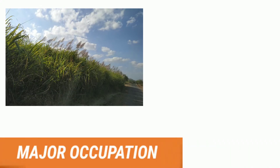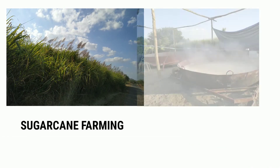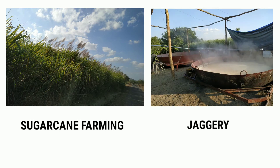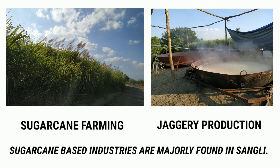Here in Sangli, the major occupation of people is sugarcane farming and jaggery production. We can say that sugarcane-based industries are majorly found in Sangli.